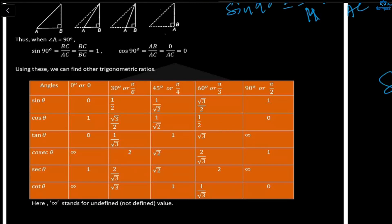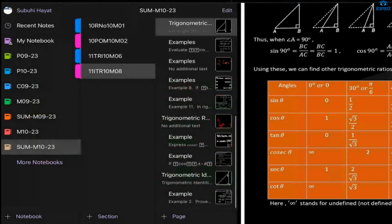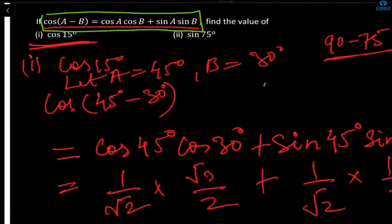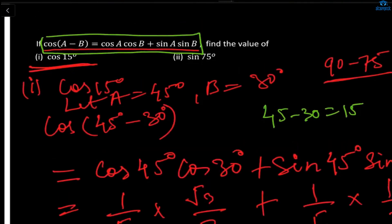An easy way to remember: sine 0° equals 0, which is the same as cos 90°. Sine 30° equals 1/2, which equals cos 60°. Sine and cos 45° both equal 1/√2. Sine 60° equals cos 30°, and sine 90° equals cos 0°. For tan: 0, 1/√3, 1, √3, infinity. You just reciprocal for cosec, sec, and cot. For sine 75°, write it as sine(90 minus 15°), giving cos 15°, whose value we already know.